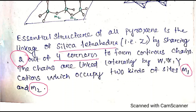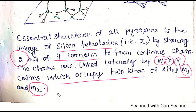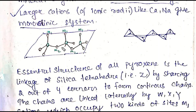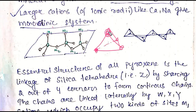The chains are linked laterally by cations in M1 and M2 sites. Looking at the tetrahedra, it has a base side and a top side. The M1 site is at the apex side of the tetrahedra, while the M2 site is at the base side of the tetrahedra.